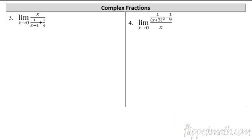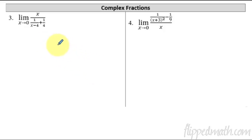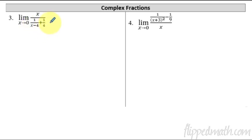Now we'll do complex fractions. There's a faster way to teach this — multiplying both top and bottom by the greatest common factor of the denominators — but I found it's too confusing. So the way we're going to do this is just by getting the same denominator. If I plug in a 0 right now, I get 0 on top, and then negative 1/4 plus 1/4, giving 0 over 0. So we need to get common denominators.